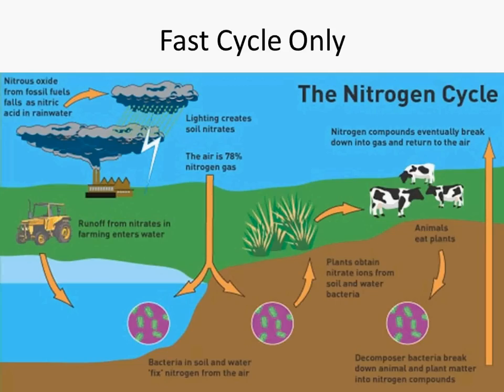Plants need nitrogen because they need to make amino acids and proteins — it's an absolute necessity of life for plants. Obviously, plants provide food for animals, so as animals eat the plants, they're not only getting the carbon, they're also getting the nitrogen as well.